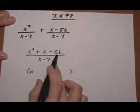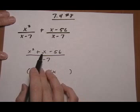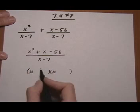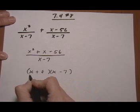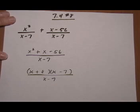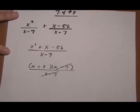x and x, factors of 56 that give us a difference of 1 because of that minus sign. So we want to do plus 8 and minus 7 over x take away 7, cancel the common x minus 7, and we get our final answer x plus 8.